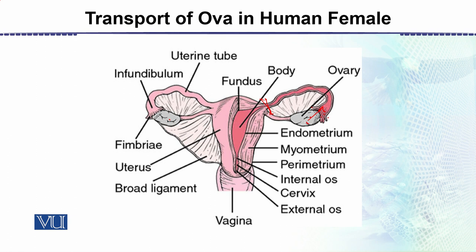یہ egg پھر اس حصے میں سے جو infundibulum ہے، infundibulum سے ہوتے ہوئے uterine tube میں آ جاتا ہے۔ وہاں سے ہوتے ہوئے پھر uterine cavity کے اندر سے گزرتا ہے، اور یہ جو حصہ ہے وہ cervix ہے، اور پھر external opening سے باہر نکل جاتا ہے۔ This is the simple root of the ovum right from the ovary to the exterior.